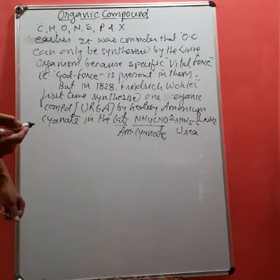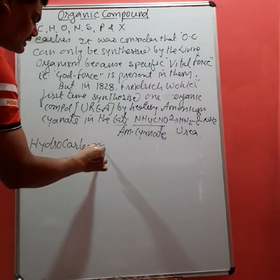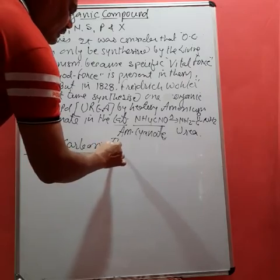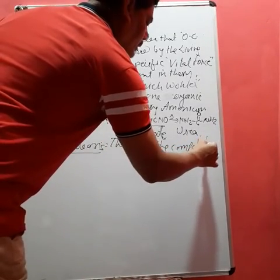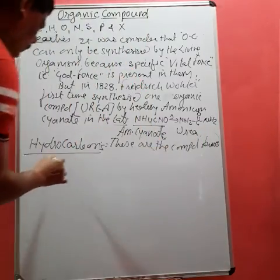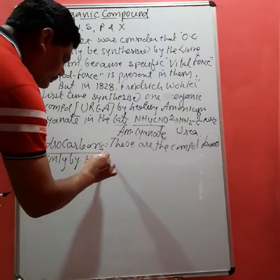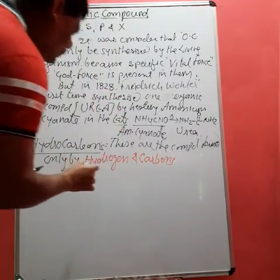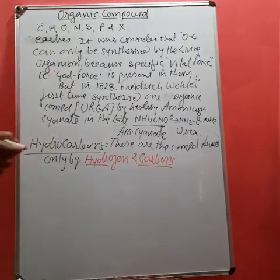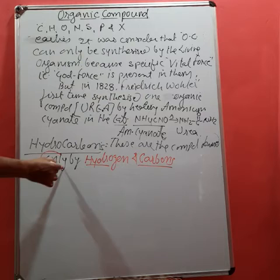That was ammonium cyanate — an inorganic compound — converting into urea, an organic compound. After that, a large number of compounds were synthesized in the laboratory worldwide. Now, starting with simple organic compounds, we can discuss hydrocarbons. These are the compounds formed only by hydrogen and carbon.